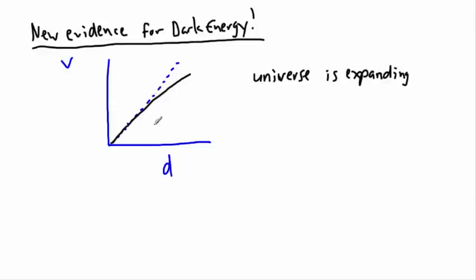That's what this really means: for this given velocity you expect to see its distance here, but instead you find it over here, its distance is farther away. The universe is expanding at a faster rate than expected.